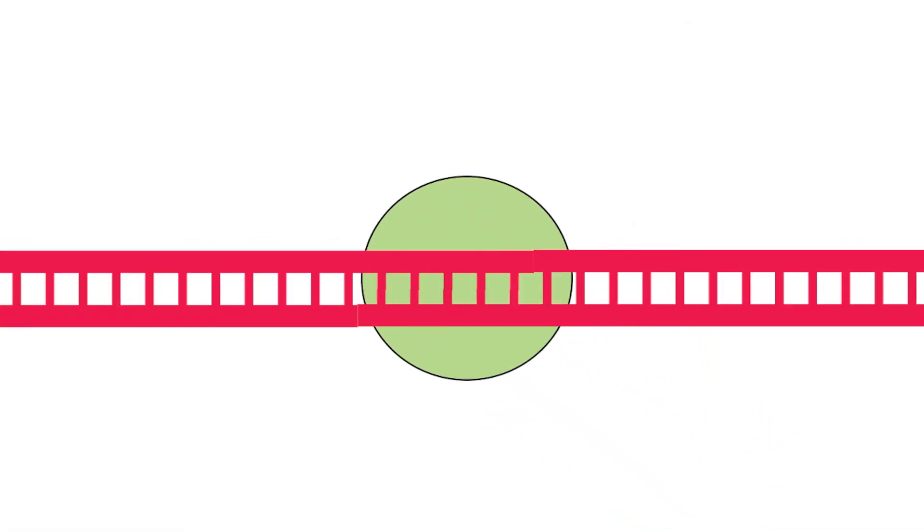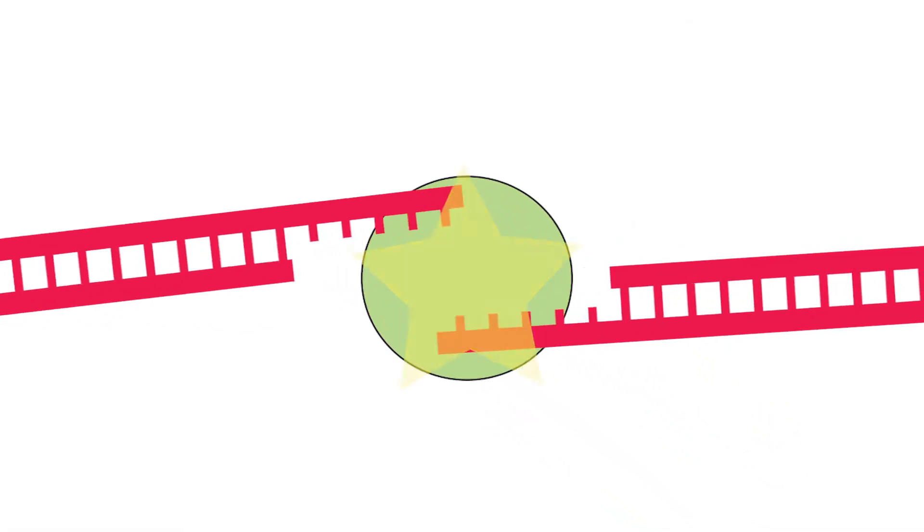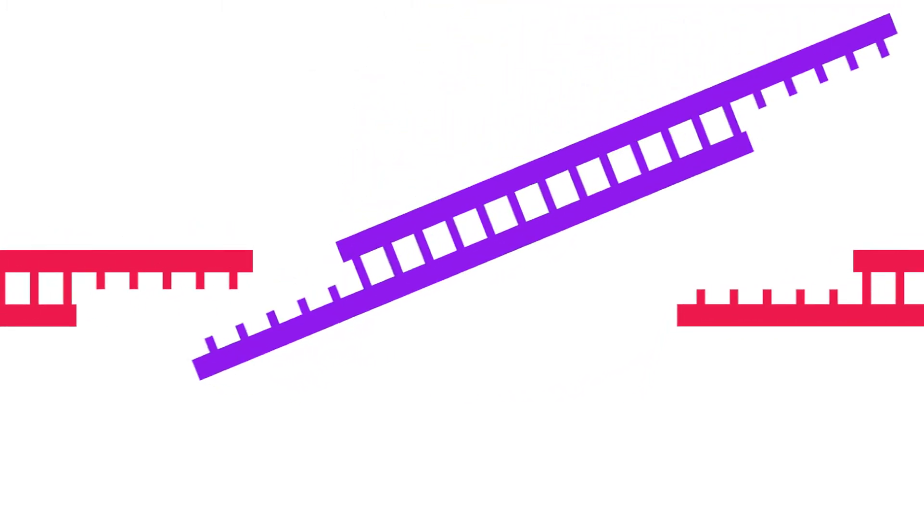These restriction enzymes are part of a restriction modification system that was discovered to exist in bacteria way back in the 1970s. Once researchers understood how the enzymes were working, they started using them in a laboratory to cut DNA up into discrete fragments that could be put back together again in novel ways, leading to DNA cloning and genetic engineering.